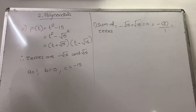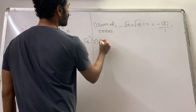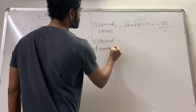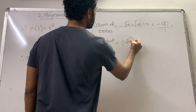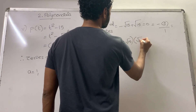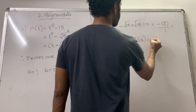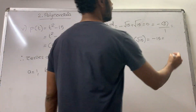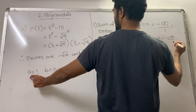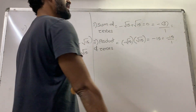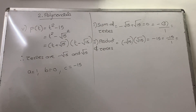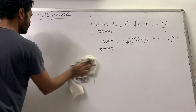The second relationship is the product of zeros. We know the product of zeros equals C/A. Our zeros are −√15 and +√15. So (−√15)(+√15) = −15. We have to show this equals C/A. C is the constant term = −15, and A = 1, so C/A = −15/1 = −15. In words: constant term divided by the coefficient of t². This completes the fifth question of question 1.